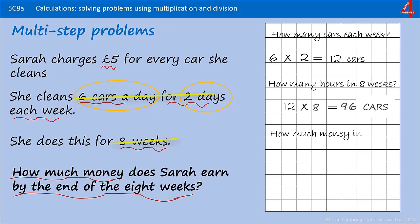How much money does she earn in total? We know that she cleaned 96 cars and we know that she charges five pounds for each car, so the calculation is 96 multiplied by 5, which is 480. Just going to check that we've answered the question — how much money does Sarah earn by the end of the eight weeks? She earns 480 pounds.